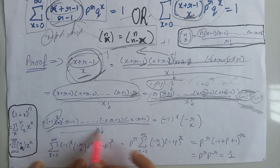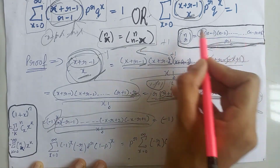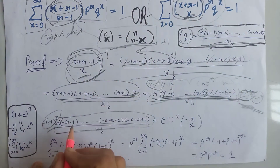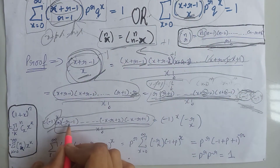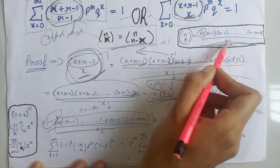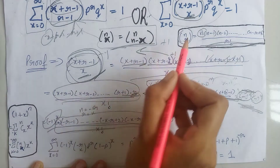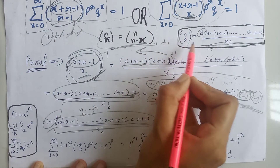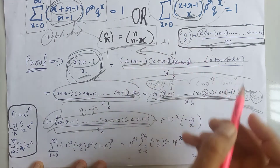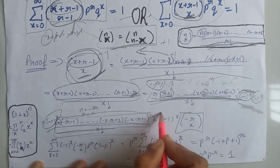Comparing this whole term with the general combination form, we see that at the place of n we have minus r, and at the place of n minus 1 we have minus r minus 1, so n equals minus r. At the place of r we have x, so r equals x. Substituting n equals minus r and r equals x gives us the answer C(-r, x).